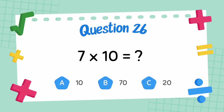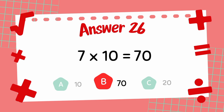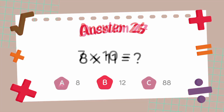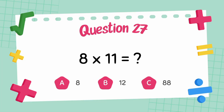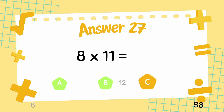What is 7 multiply 10? The answer is 70. What is 8 multiply 11? The answer is 88.